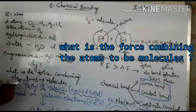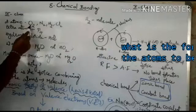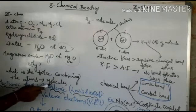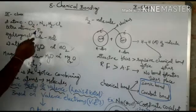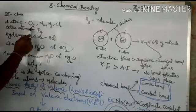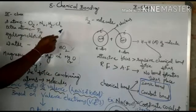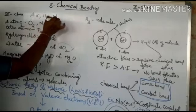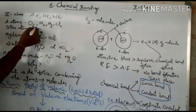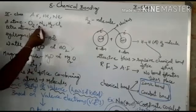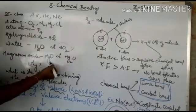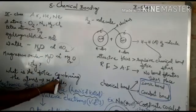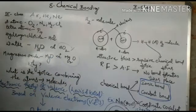In 9th class you learned that an atom is a single element, and when 2 or more atoms combine you get a molecule. O2, N2, and H2 are molecules, while argon, helium, and neon exist as single atoms. So what is the force combining these atoms to form molecules like O2, N2, H2O, MgO, and HCl? That is what you have to learn in this chapter.